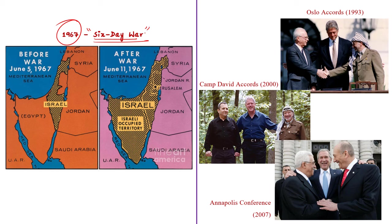The Six-Day War was a brief conflict between Israel on one side and Egypt, Jordan and Syria on the other. Israel launched a preemptive strike and in just six days captured territories like the Sinai Peninsula from Egypt, the Golan Heights from Syria, and also occupied the Gaza Strip, West Bank and East Jerusalem. Israel won the war and it resulted in significant territorial changes in the Palestine region.